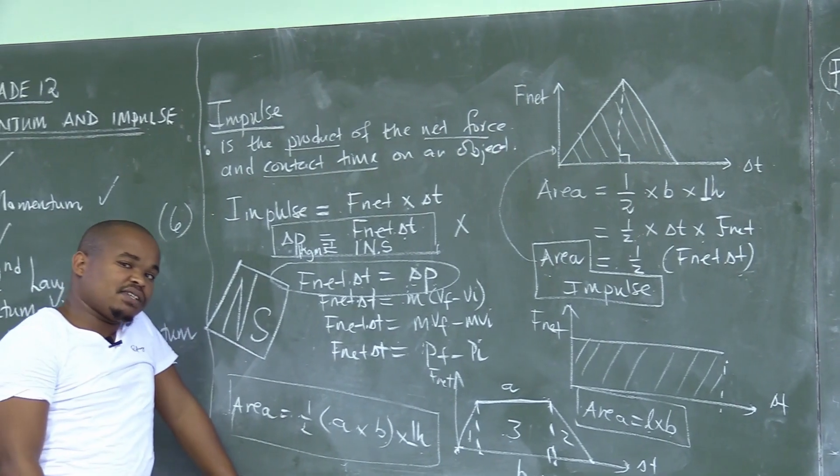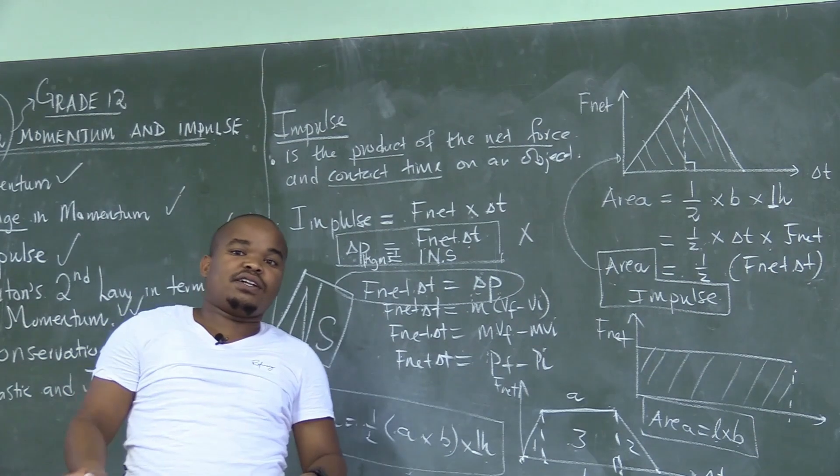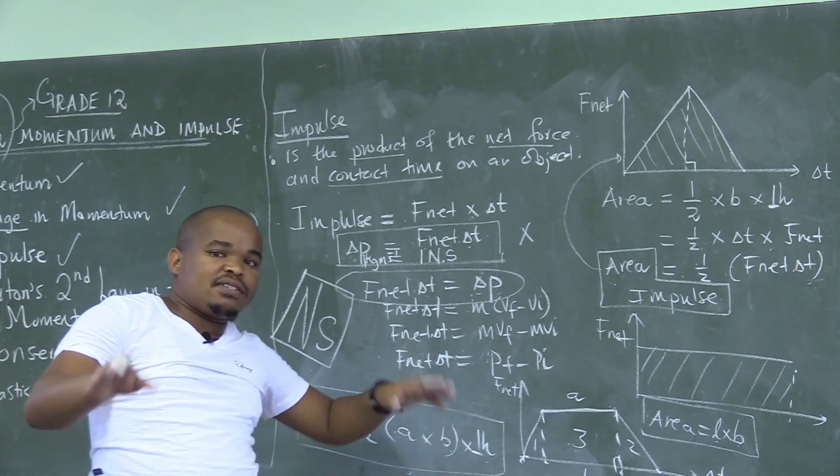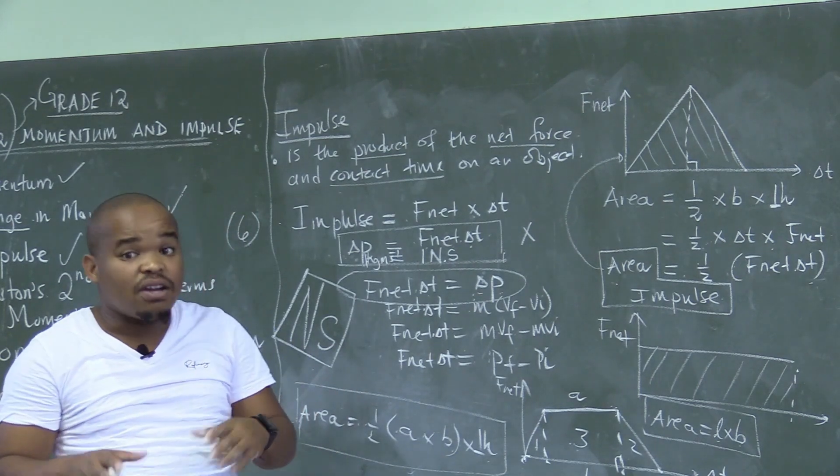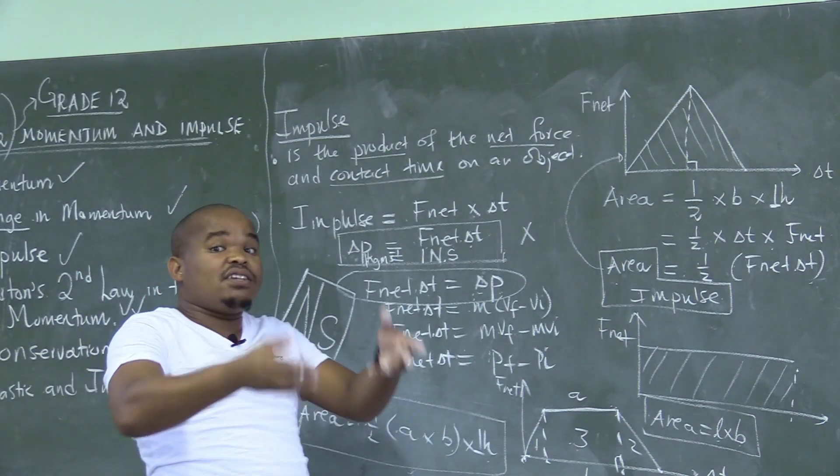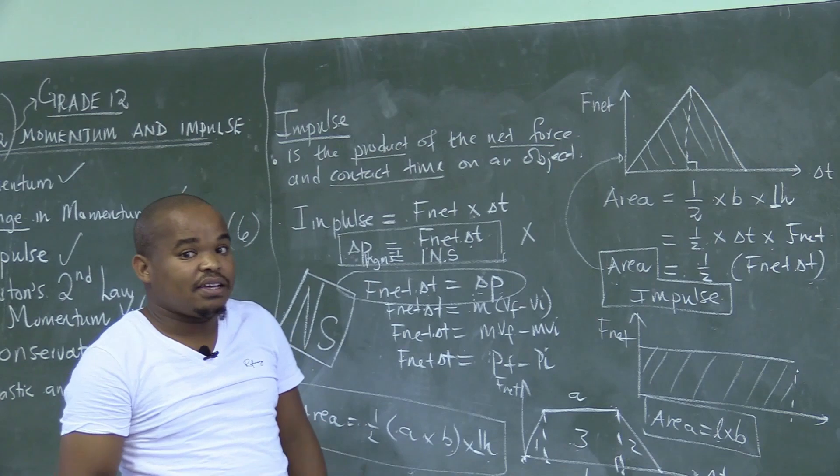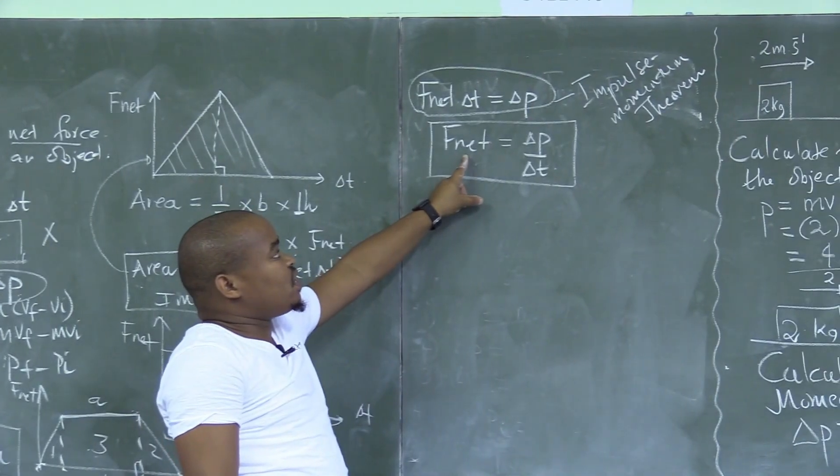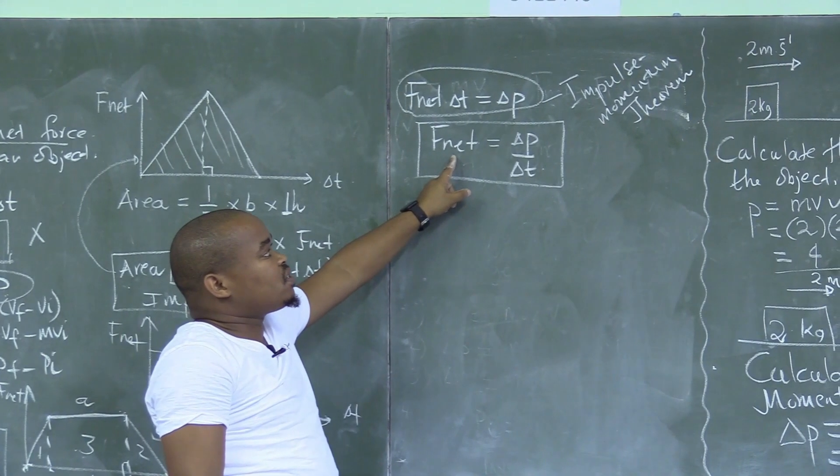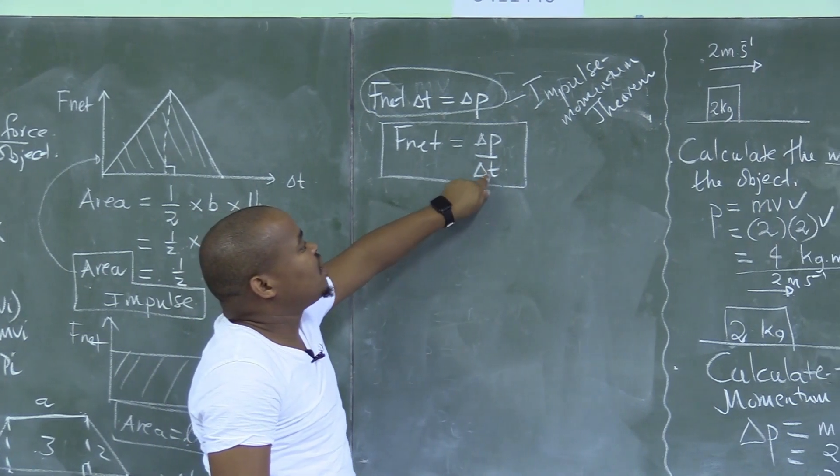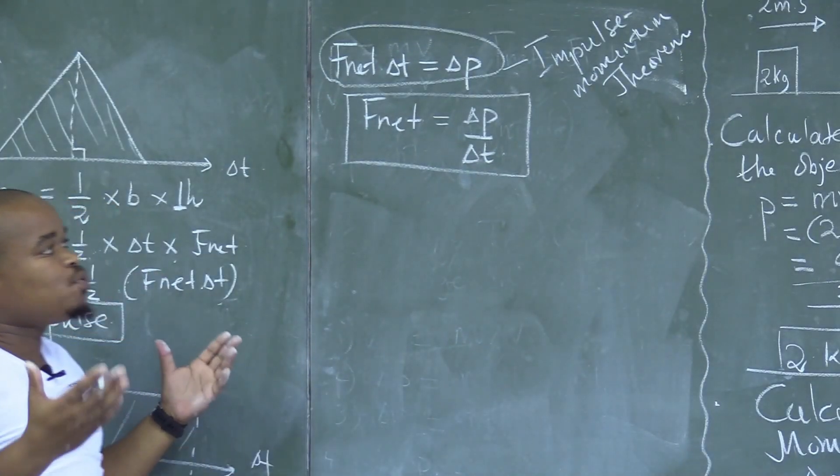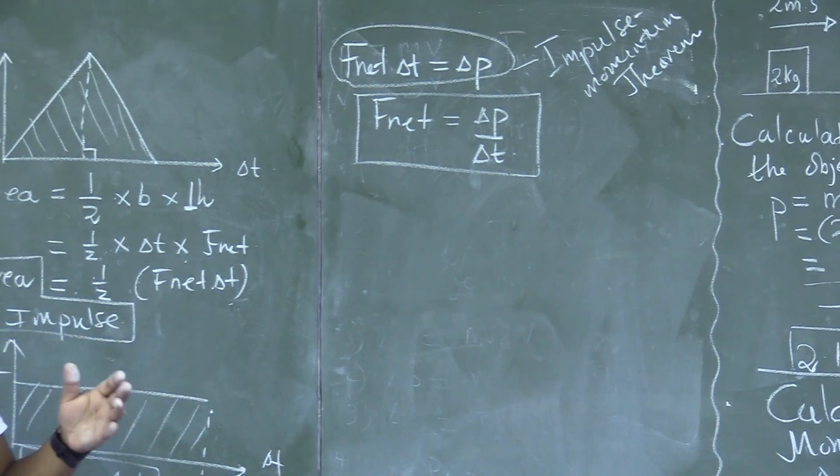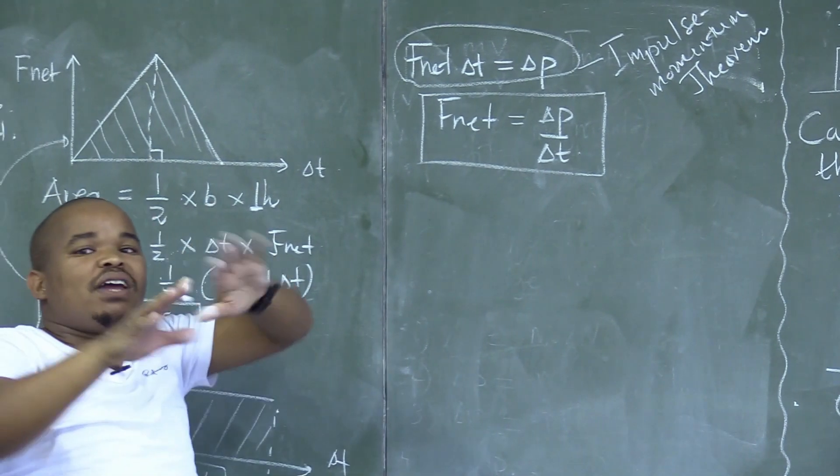The momentum is the product of the mass and velocity of an object. The impulse is the product of the net force and the contact time on an object. Number 3, the net force acting on an object is equal to the rate of change of momentum. I am just giving my definitions from my formula.